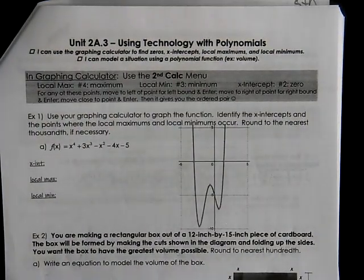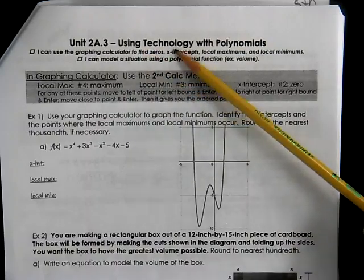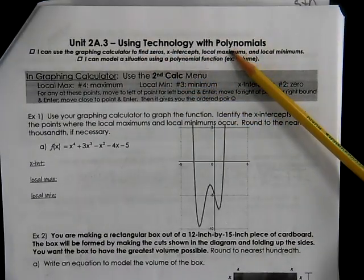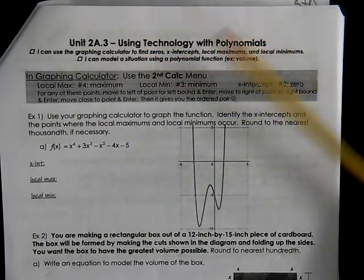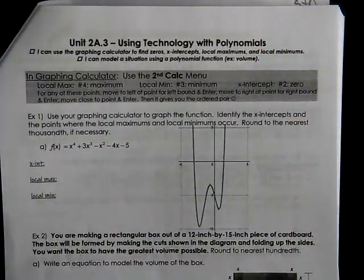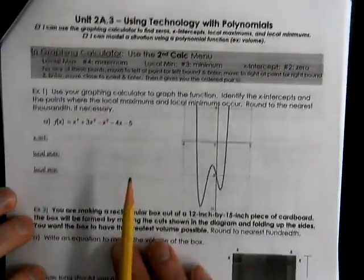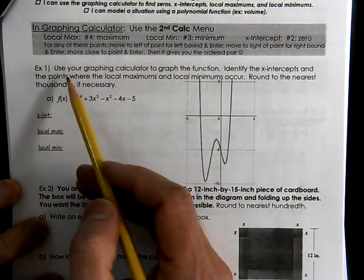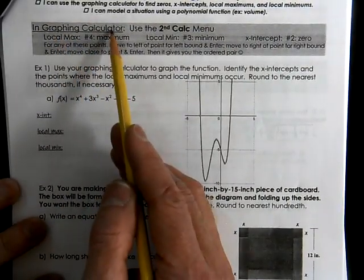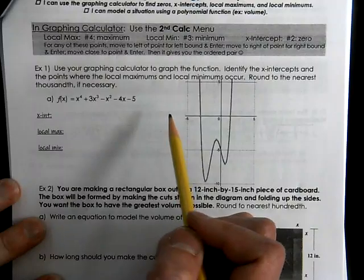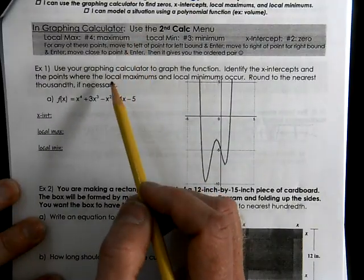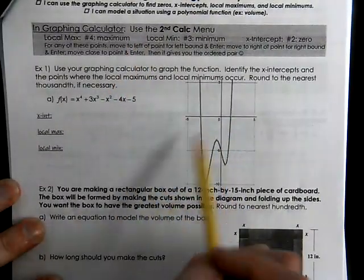This is Algebra 2 with Trig. We're using technology with polynomials. We've actually learned most all of this while we were learning about quadratics. What we're going to be talking about is how the graphing calculator can do some of these calculations, but I'm also going to demonstrate Desmos with this particular one.